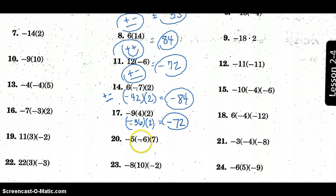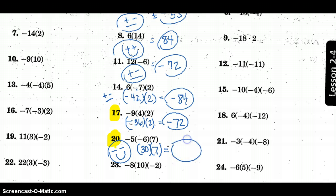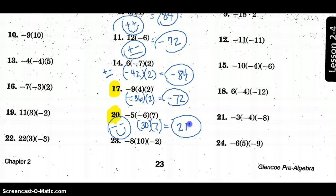Here I have an even number of negative signs. Compare problem 17 with problem 20. Problem 17 has one negative and two positives — therefore it's negative. Problem 20 has two negatives, so the outcome should be positive. Remember, two negatives make a positive. Negative times negative: 5 times 6 is positive 30, times positive 7 gives a positive outcome because we have an even number of negative signs — two negatives — so positive answer.